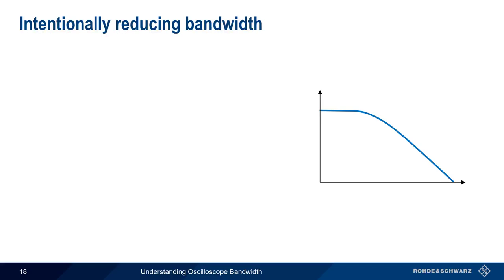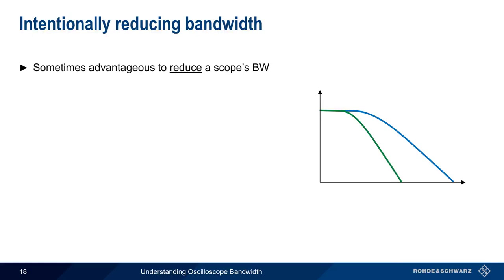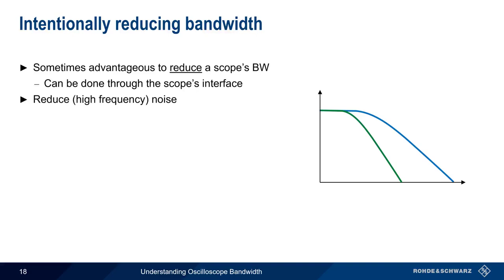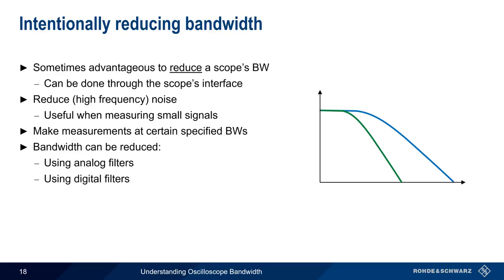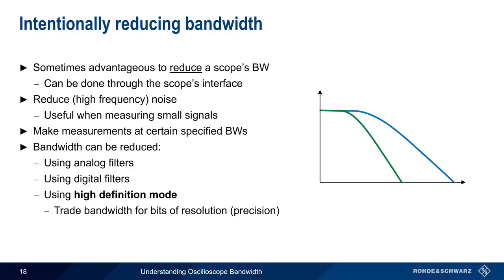Throughout this presentation, we've seen how greater bandwidth is generally more desirable, particularly when looking at digital signals. But sometimes it can be advantageous to intentionally reduce a scope's bandwidth. This is usually a user-configurable setting on the oscilloscope. One of the main reasons why we might want to reduce or limit the bandwidth of our scope is that this reduces high-frequency noise and makes it easier to measure smaller signals. Limiting bandwidth is also helpful when we want to make measurements at the bandwidth specified for a given component. There are three ways of reducing or limiting bandwidth on modern digital oscilloscopes: analog filters, digital filters built into the scope itself, and high-definition mode, in which we reduce bandwidth in order to improve resolution or precision.